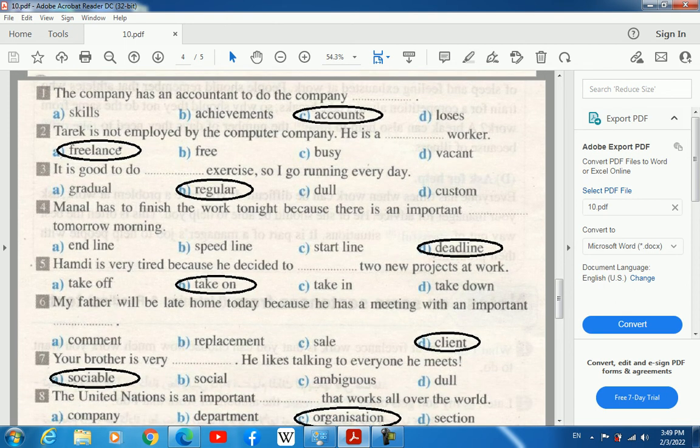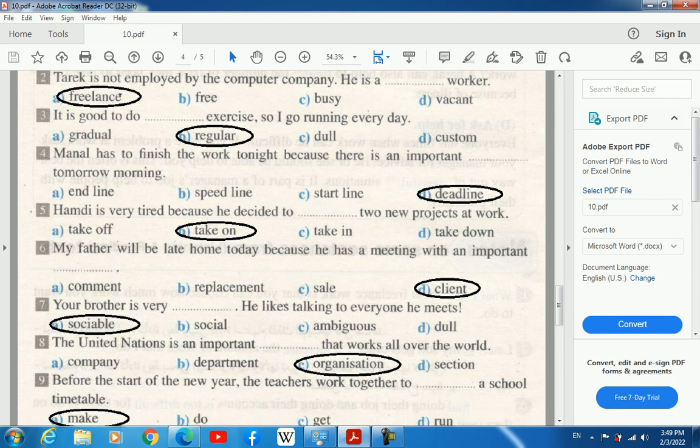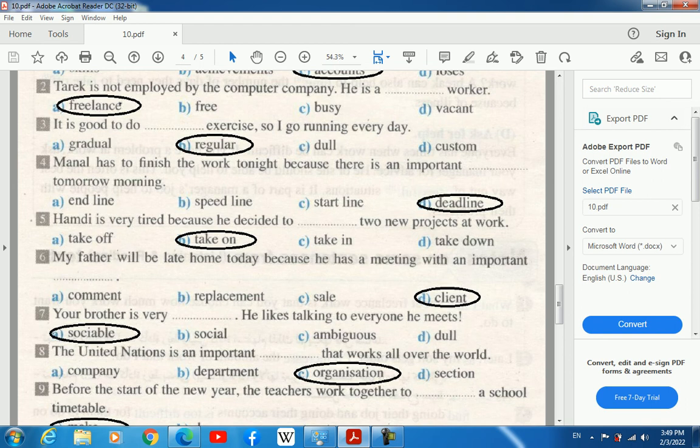1. The company has an accountant to do the company accounts. 2. Tara isn't employed by the computer company. He is a freelance worker.